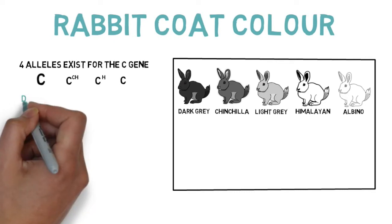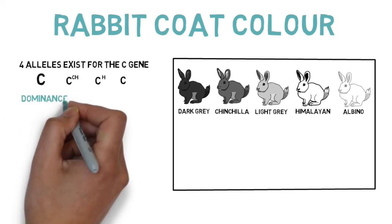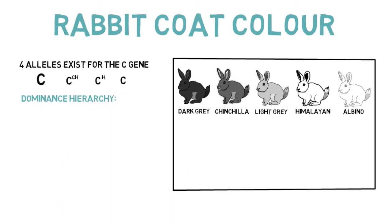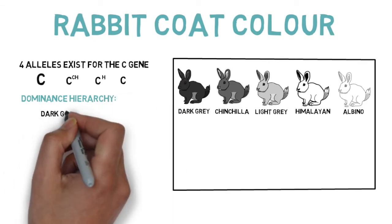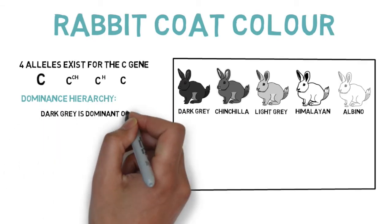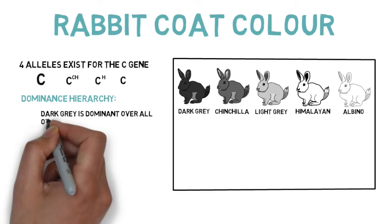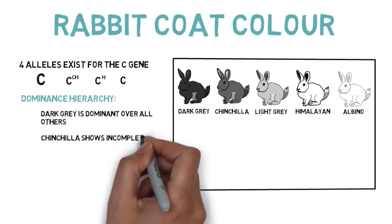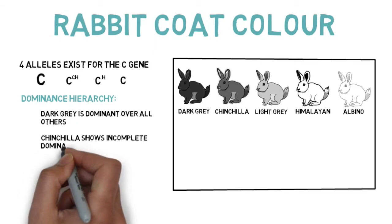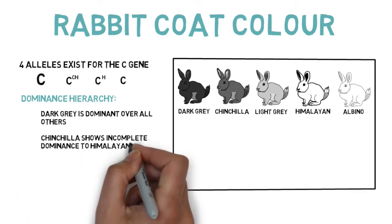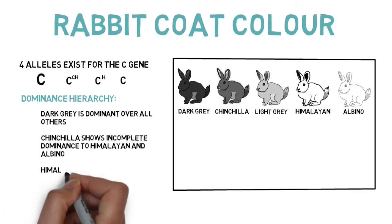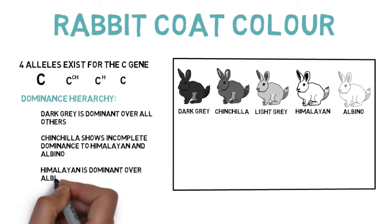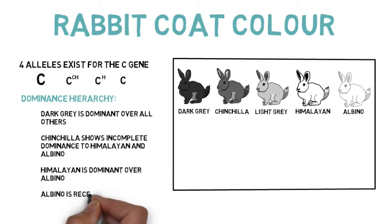The dominance hierarchy is as follows. Dark gray is dominant over all others. Chinchilla shows incomplete dominance in regards to Himalayan and albino. Himalayan is dominant over albino. And albino is recessive.